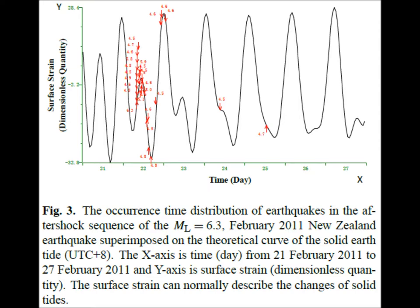The large magnitude 6.3 earthquake occurred near the zero-degree phase of the semidiurnal solid tidal curve. Most of the large aftershocks occurred close to the zero-degree, 90, 180, and 270-degree phases. As a whole, the results suggest that the semidiurnal solid tide had an effect on the larger aftershocks of the 6.3 New Zealand earthquake.